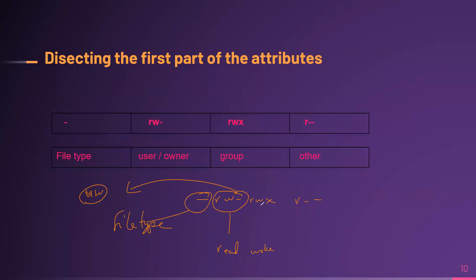This particular user is in a particular group, and for that group they can do read, write, and execute. And then the last one is others, they can only do read.